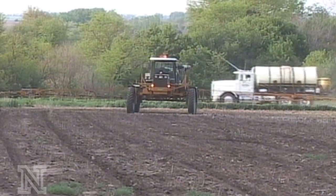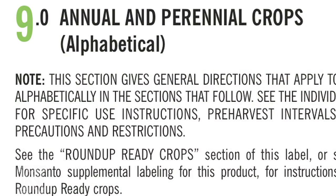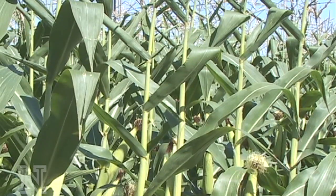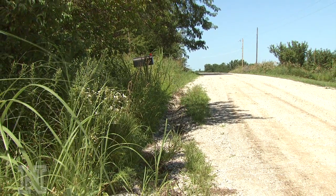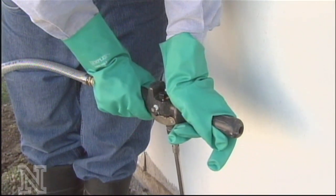The federal label — Section 3 label — for pesticides must be followed. An applicator must use the product according to the label and apply only to sites that are identified on the label, such as crop species, turf, roadsides, or structures.